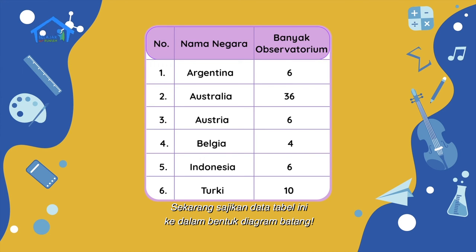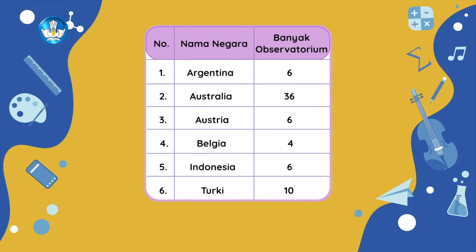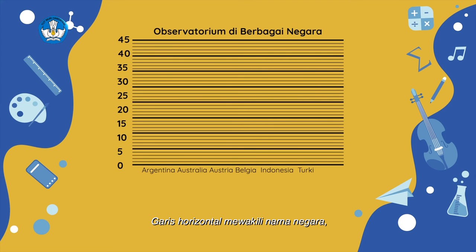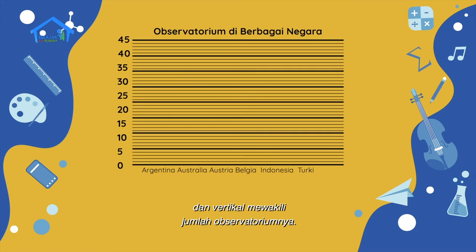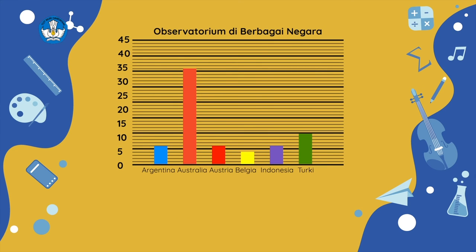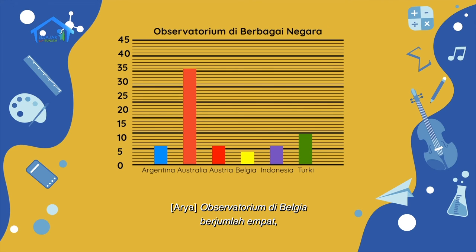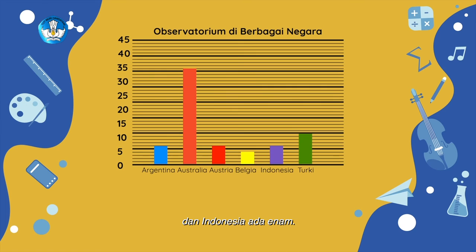Sekarang, sajikan data tabel ini ke dalam bentuk diagram batang. Teman-teman, coba buat di rumah ya. Pertama, kita bikin dulu garis vertikal dan horizontalnya, lalu kita kasih keterangannya. Garis horizontal mewakili nama negara dan vertikal mewakili jumlah observatoriumnya. Tiap garis mewakili satu observatorium. Sekarang kita masukkan datanya. Pertama, Argentina mempunyai enam observatorium. Australia berjumlah 36 dan Austria berjumlah enam observatorium. Observatorium di Belgia berjumlah empat dan di Indonesia ada enam. Dan yang terakhir, ada Turki dengan jumlah sepuluh observatorium. Betul sekali.